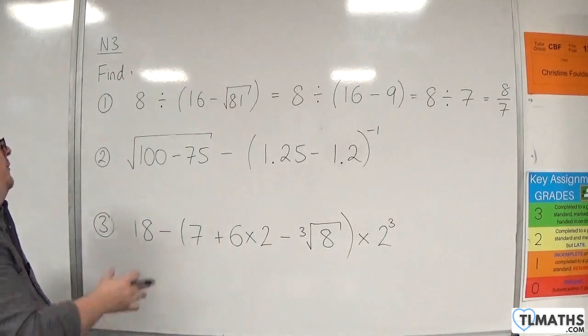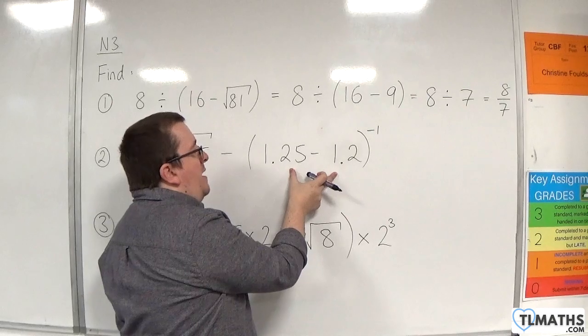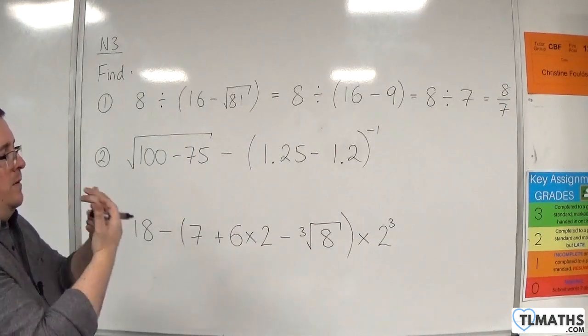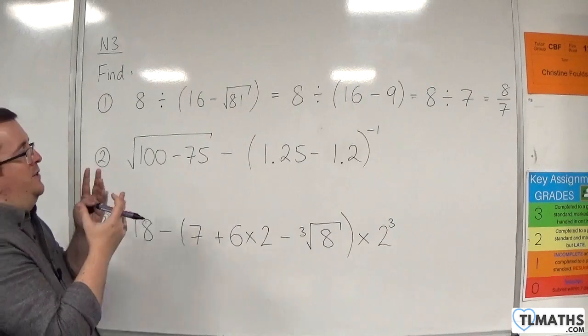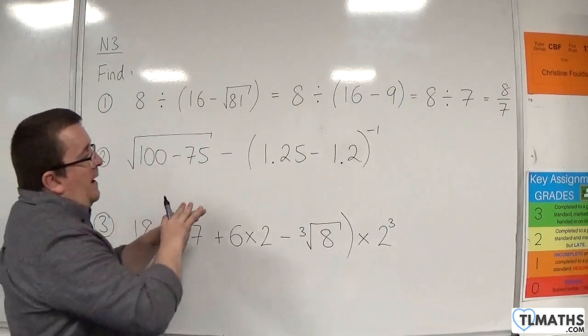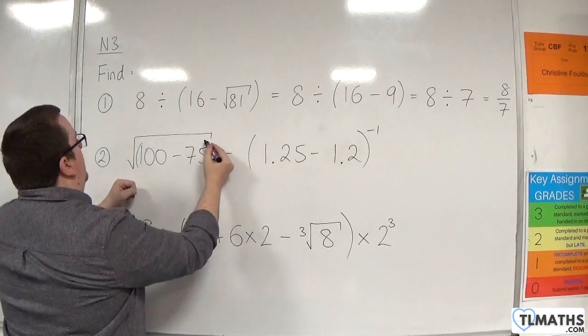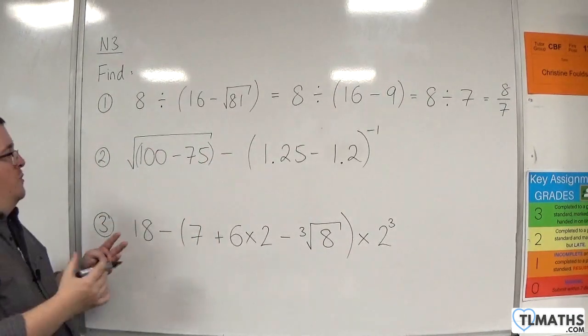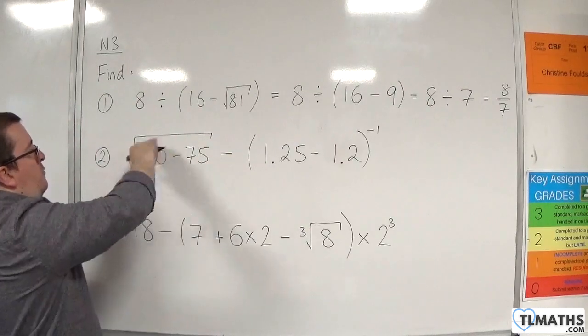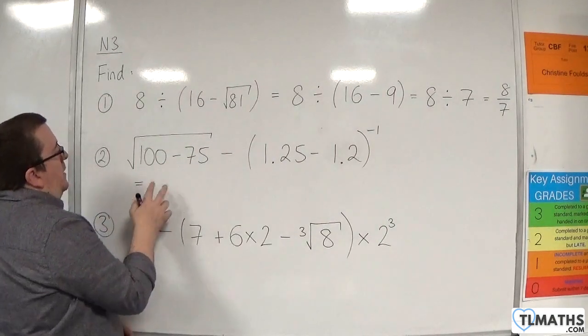Number two. We have the square root of 100 take away 75, take away 1.25 take away 1.2 in a bracket to the minus 1. First of all, we've got to deal with what is in a bracket. And there are actually two brackets, or two pairs of brackets I should say. It doesn't look like there is, but we've definitely got that one there. And there is another one here inside the square root. We don't bother writing or drawing, because essentially it's clear from how I've drawn this that the square root goes over everything that is inside here, the 100 take away 75. So there is a sneaky bracket there as well.